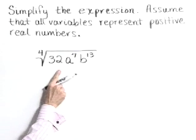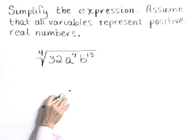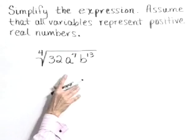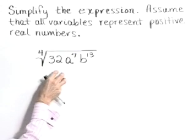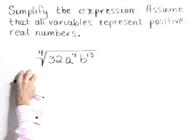Here we have the fourth root of 32, a to the seventh, b to the thirteenth. We're going to simplify this by pulling out as many of our perfect fourth powers as possible.